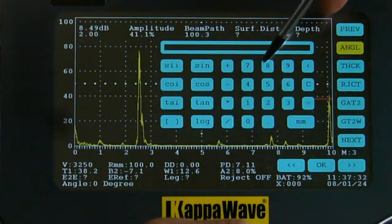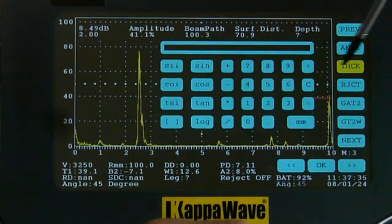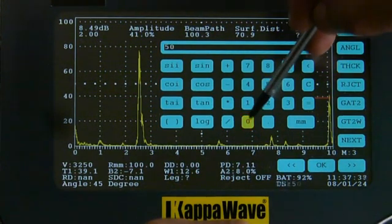We will now enter the angle of the probe, 45 degrees, and the thickness is 50mm because this is the thickness of the DAC block.